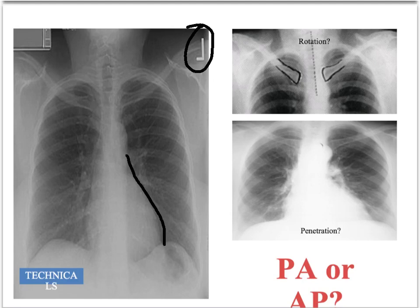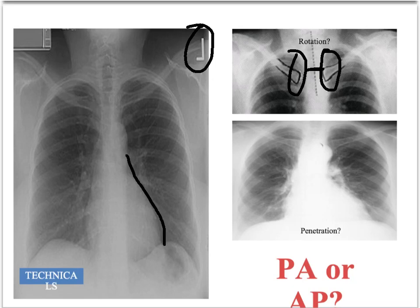Next, we want to know whether the X-ray is rotated. To assess that, look at the ends of the clavicles and assess how far away they are from the centre of the spinous processes running down the middle — are they equidistant? If they are not equidistant, the X-ray may be slightly rotated, which can make structures like the mediastinum harder to interpret.